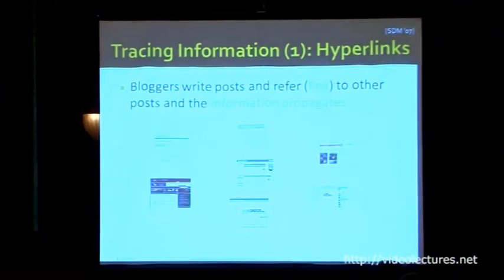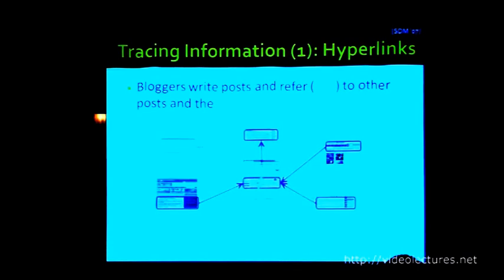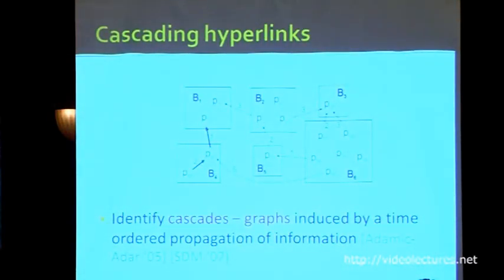One way to do this is to trace hyperlinks. If a blog creates a link to another blog post or news article, we assume information transmitted from there. If I have a blogosphere of seven blogs, bloggers write posts and other bloggers write posts linking to them over time. With directed edges as hyperlinks — a blog post on one blog pointing to a blog post on another — I can trace hyperlinks in reverse direction. I call the resulting graph or tree a cascade: a graph induced by time-ordered propagation of information.